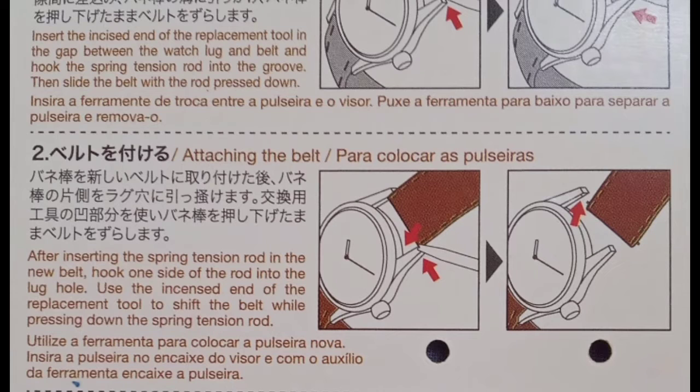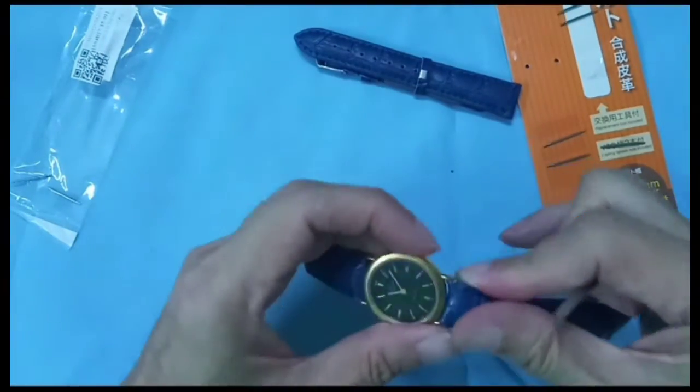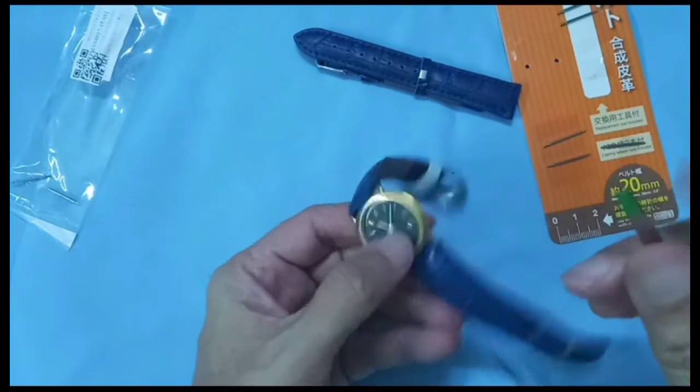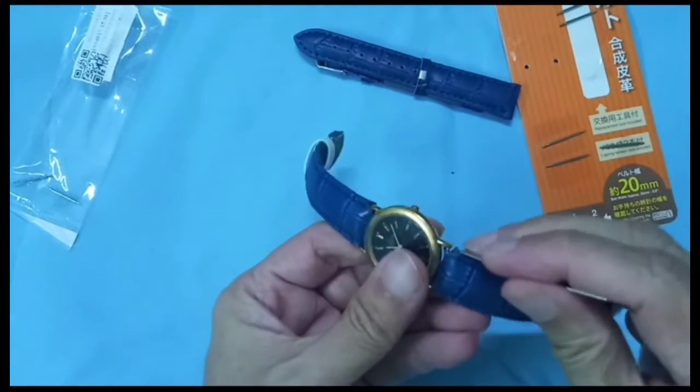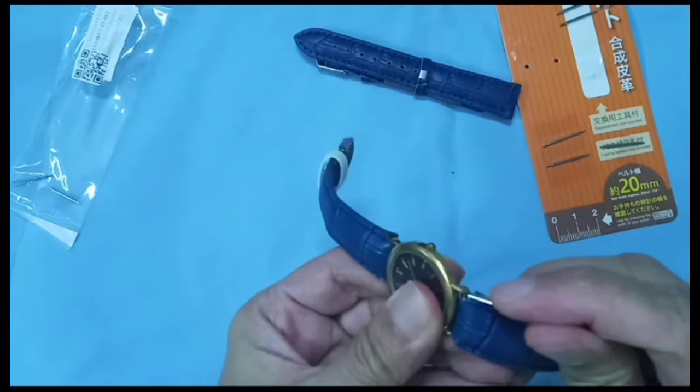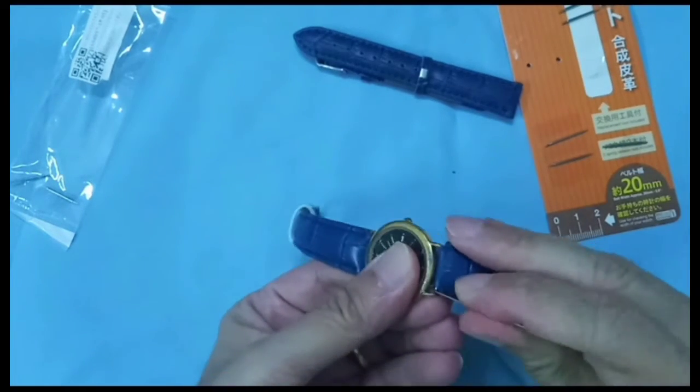This diagram shows how to change the watch strap which was shown at the back of the Daiso packet. Step 1. Remove the strap using the tool. Press onto the spring bar in order to release it from the lock holders.